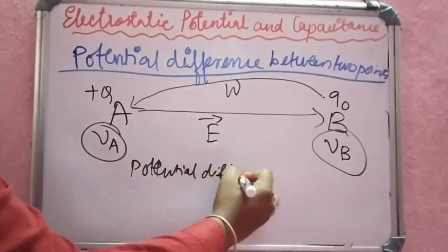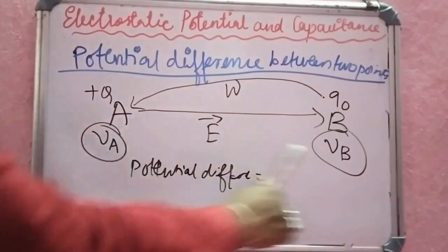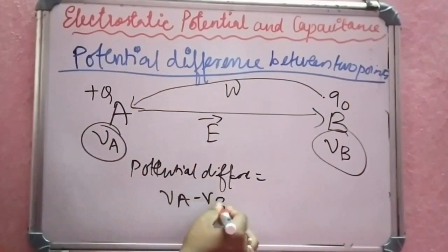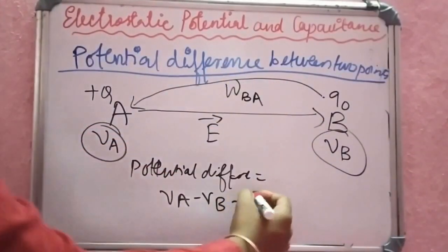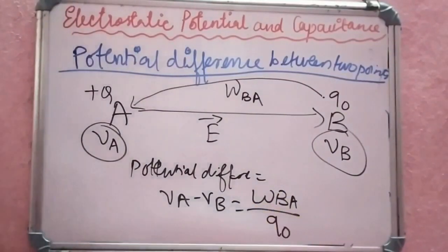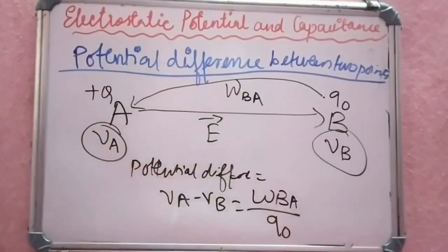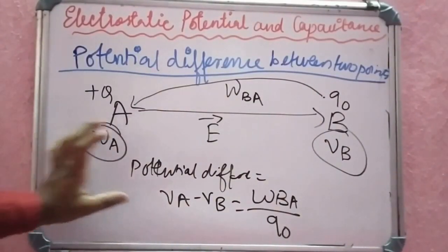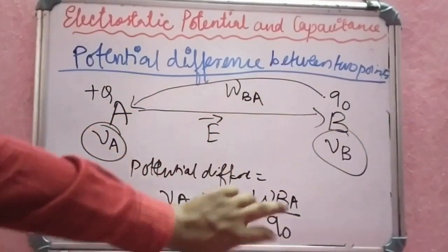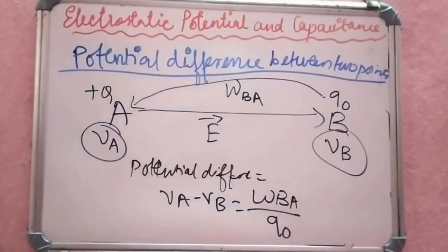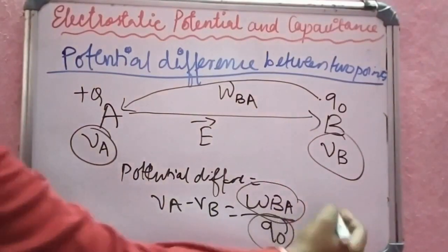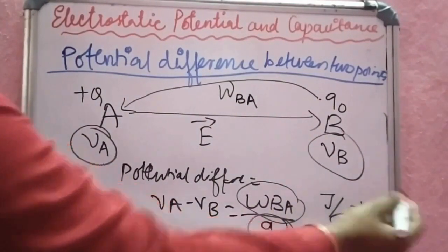The potential difference is equal to VA minus VB, which is equal to work done from B to A divided by the test charge Q0. So the potential at point A minus the potential at point B equals the work done while moving the charge from point B to A divided by the test charge. The unit of work done by charge is Joule per Coulomb, which is equal to Volt.